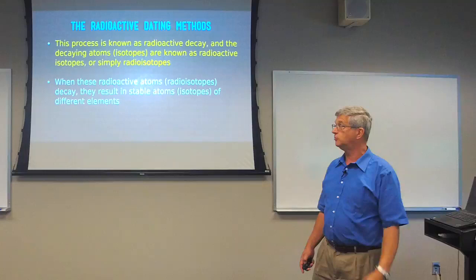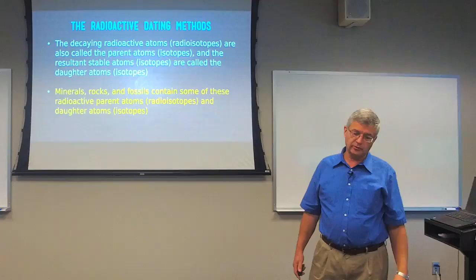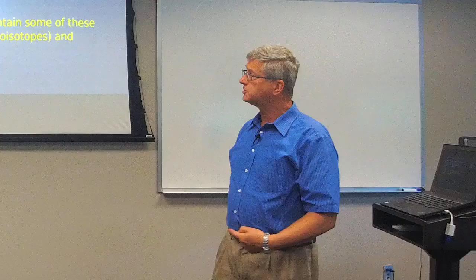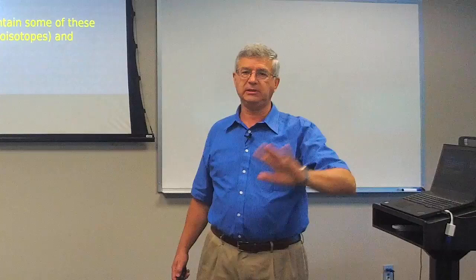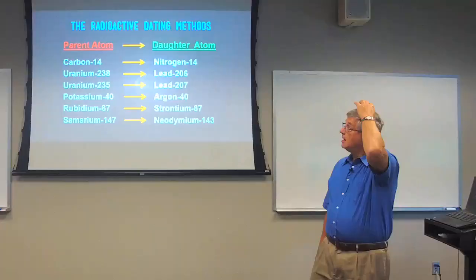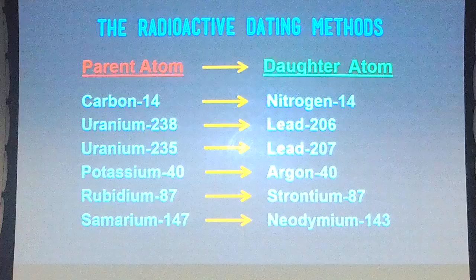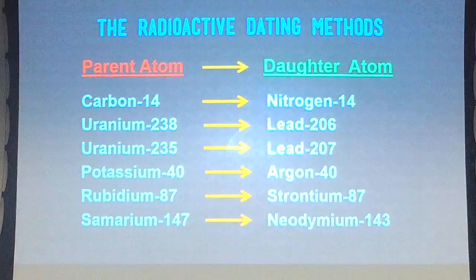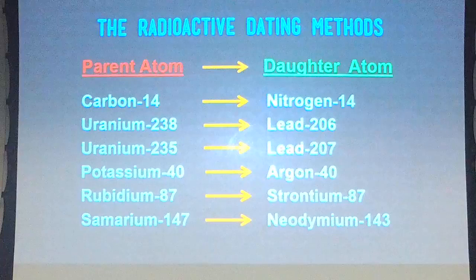Minerals, rocks, and even fossils contain some of these radioactive parent atoms and the products of decay. I add fossils because it is possible to date some fossils using radioisotopes — if you've got the equipment to detect trace amounts of parent and daughter atoms, you can directly determine a radioactive age for a fossil. Here are the different methods available: carbon-14 decays to nitrogen-14, which we'll cover as a separate topic in the next session.